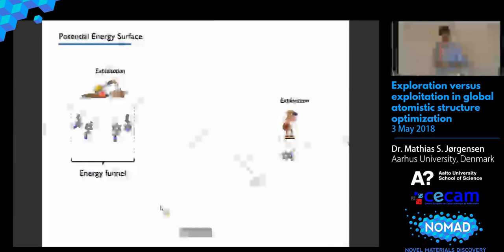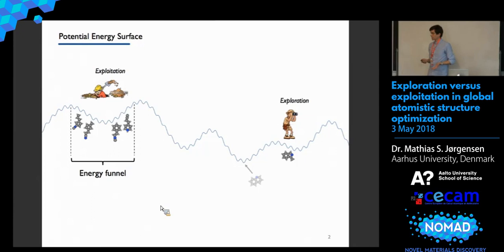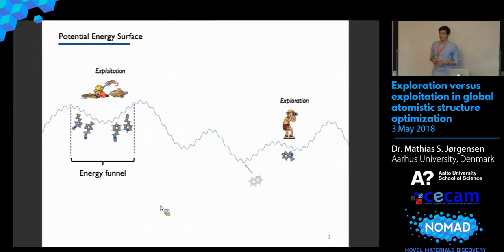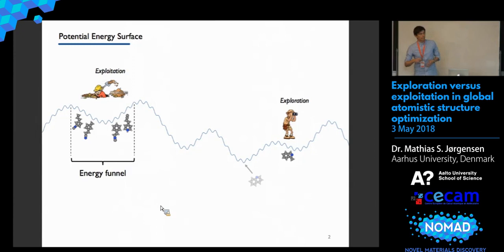Let's jump right into the task at hand. In global structure optimization, we want to reach the global minimum structure, here depicted as the quinol molecule. We want to do this in a vast configuration space with many other local minimum structures, and we want to do it by evaluating as few structures as possible in order to save computational resources.